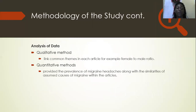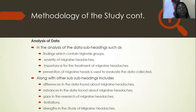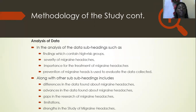Analysis of data: qualitative methods are used to link common themes, and quantitative methods provide the prevalence, similarities, and causes of migraine within the articles. The subheadings contain findings, severity, importance, and prevention of migraine headaches to evaluate the data collected, along with subheadings including differences, advances, gaps, limitations, and strengths in the study of migraine headaches.